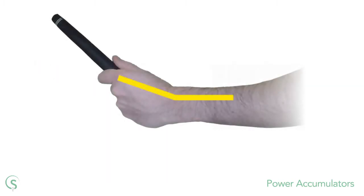When accumulating power we decrease the angle between these two lines. Then during the downswing we release that stored power by uncocking the left wrist, increasing the angle.